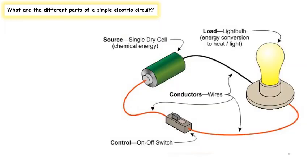This drawing shows you a simple electric circuit. A circuit is a complete path around which electricity can flow. It must include a source of electricity, such as a battery, and materials that allow electric current to pass through them easily, like copper wires. These wires can be used to link the positive and negative ends of a battery, creating a circuit.